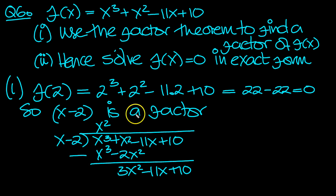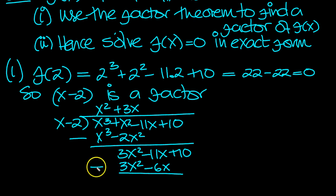How many of these go into this? It's just plus 3x. So 3x times x is 3x squared. 3x times minus 2 is minus 6x. Take them away then again. And what we're left with now, minus 11x take away minus 6x is minus 5x plus 10.